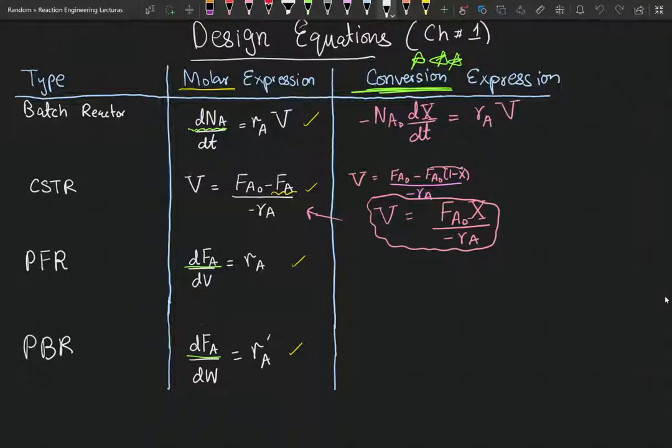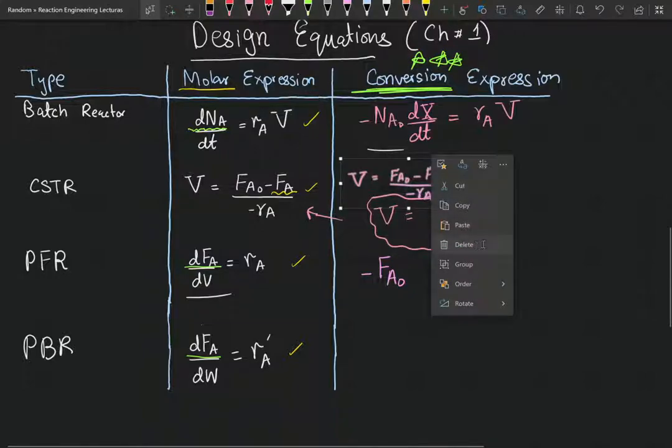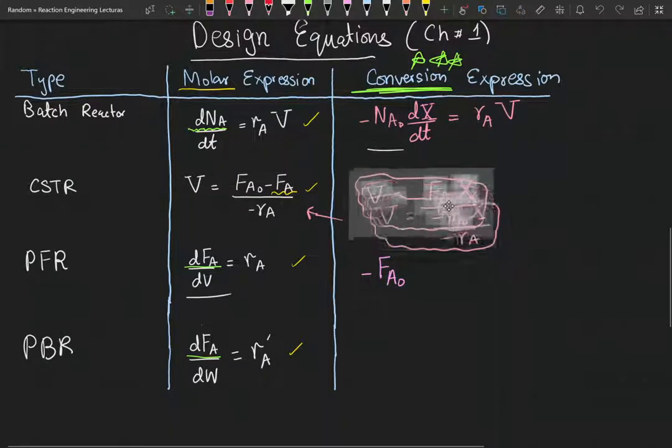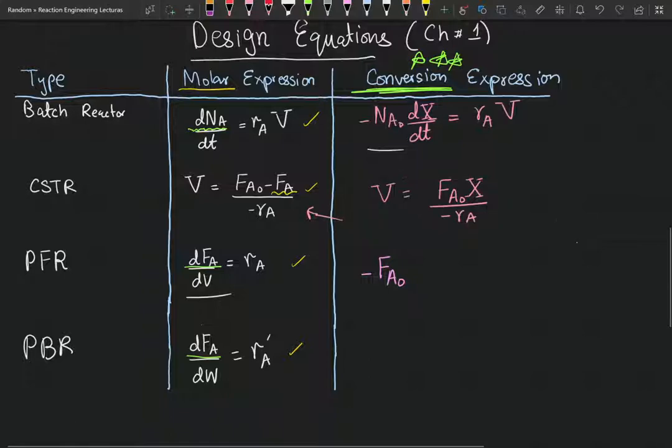And dF_A will become, this is gonna be akin to that expression. So we're gonna have negative F_A0. I'm just gonna get rid of this. I hope you guys understand the algebra. Much cleaner. F_A0 dX dV equals r_A. Just a simple substitution of dF_A. And the final equation for the PBR.